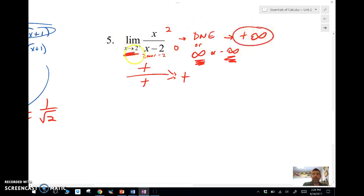Any time a limit as X approaches a number goes to an infinity, positive or negative, then I know I have a vertical asymptote at X equals two in this case, whatever the denominator was.